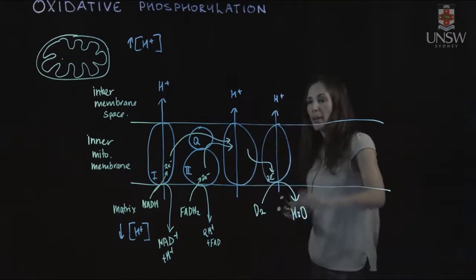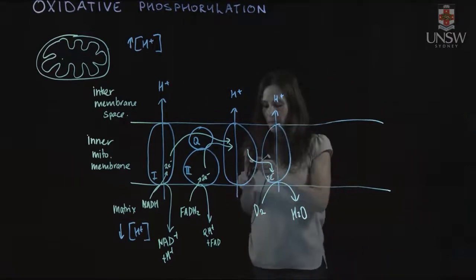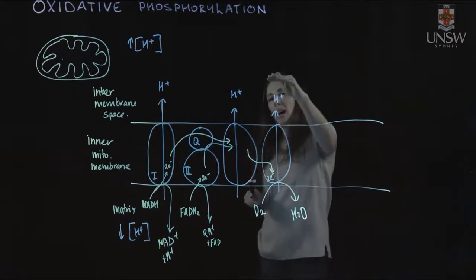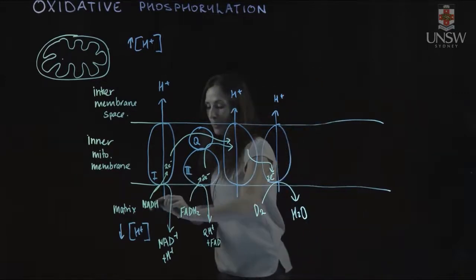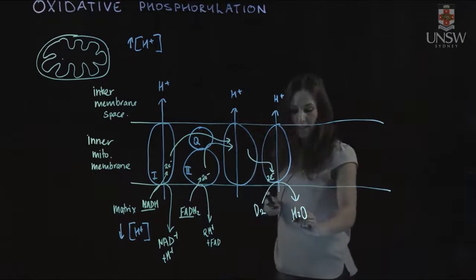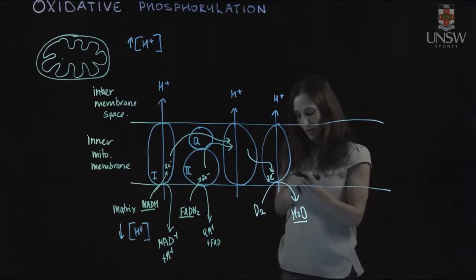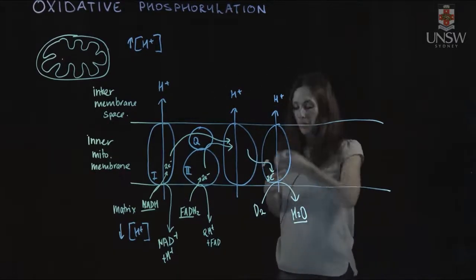As this happens, the proton gradient is produced, creating a high concentration of protons in the intermembrane space. Electrons from these molecules move across to end up in water, and protons are moved across the membrane.